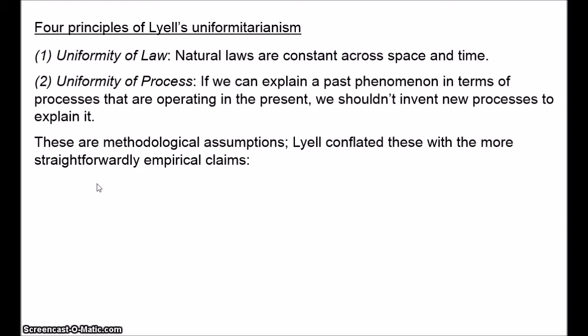These two principles are methodological — not directly testable, but guiding assumptions for research. In order to get research started, we assume the uniformity of law and uniformity of process, or so Stephen Jay Gould claims. The uniformity of law seems potentially open to empirical testing, but Gould takes these to be methodological. These two principles are uncontroversial; most scientists would accept them as very basic features of the scientific approach. It would require a pretty striking amount of evidence to think that natural laws are not constant and have changed over time.